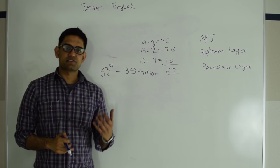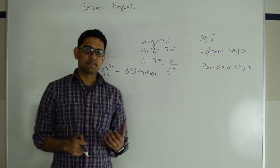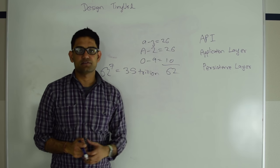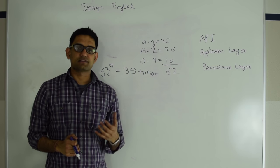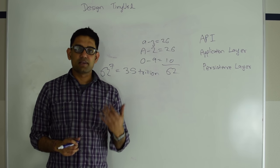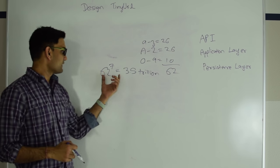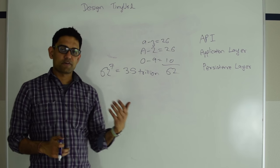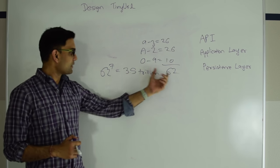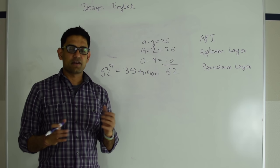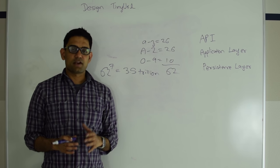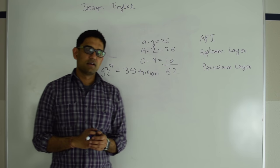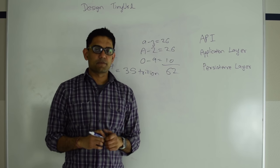If your service is generating a thousand tiny URLs per second, it will take you 110 years to exhaust 3.5 trillion combinations. On the other hand, if your service is generating a million tiny URLs per second, you'll exhaust 3.5 trillion in about 40 days. So if you're doing more requests per second, you need to increase the number of characters in the tiny URL. For this video, we'll assume our service is generating a thousand requests per second, so we're happy with a 7-character long URL.